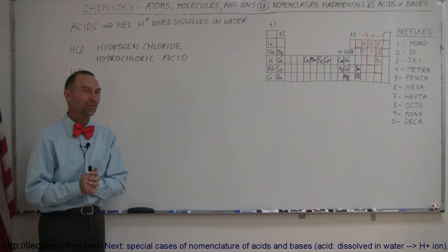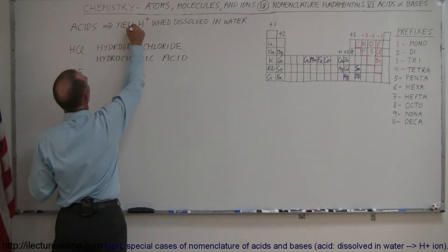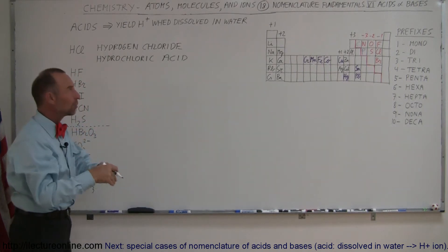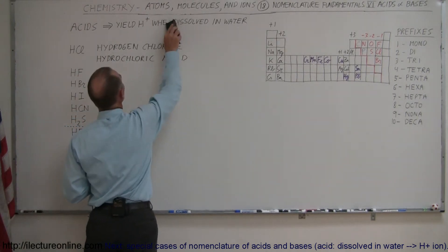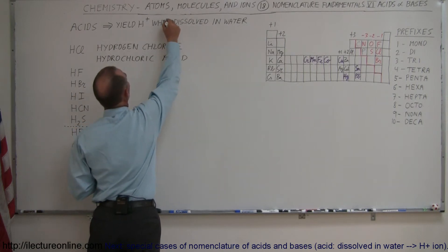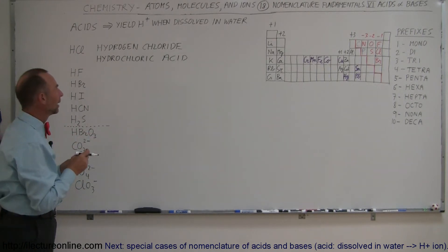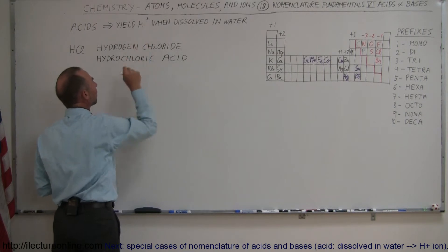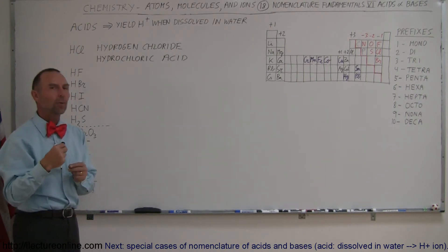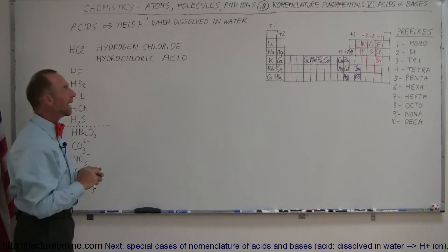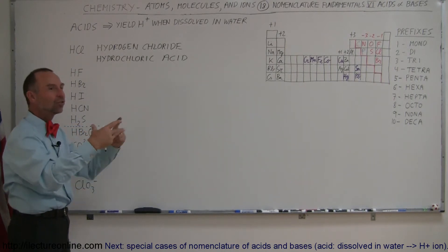The next section on nomenclature fundamentals covers acids and bases, starting with acids. Acids are substances that when you place them in water — in an aqueous solution as we call it — they will dissociate. Something comes off the molecule: a hydrogen ion, a positive hydrogen ion — a hydrogen without its electron. That hydrogen will then free-float in the water, making it more acidic, lowering what we call the pH. That is how we know we are dealing with an acid.